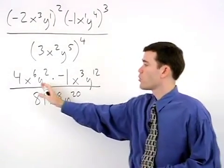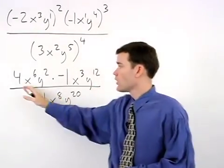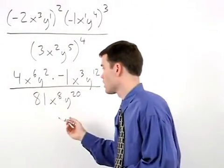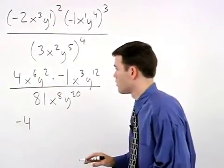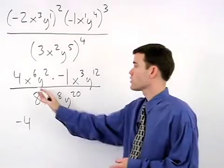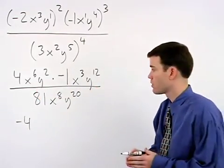Next we apply our product rule across the numerator. Multiplying the two coefficients, we get negative 4. But remember that the product rule states that when multiplying powers that have the same base, we add their exponents.